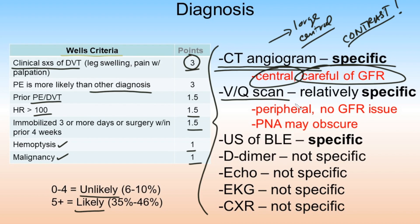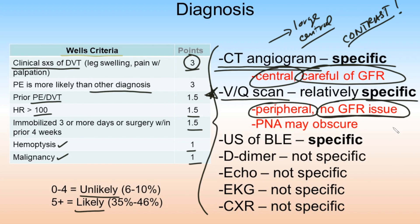The VQ scan is an older but relatively specific alternative. It performs better for peripheral disease and is the preferred test for chronic thromboembolic disease, when past clots are suspected, or when pulmonary artery pressure is rising. Because it uses nuclear medicine rather than contrast, GFR is not an issue. However, pneumonia can obscure ventilation-perfusion interpretation. Generally: use CT angio if GFR is good but there's pneumonia; use VQ scan if GFR is poor but the chest X-ray is clear.